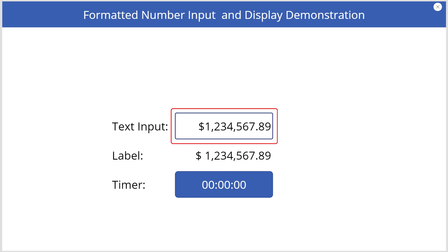However, these additional formatting characters can only be entered after the number has first been entered, and they will only be saved if the underlying field to which the value is to be saved is a text field. If the underlying field is a currency or number field, then these additional formatting characters will not be saved. Therefore, the next time the user views the record after it has been saved, the number will be displayed without any formatting.